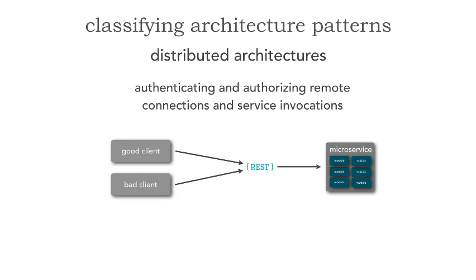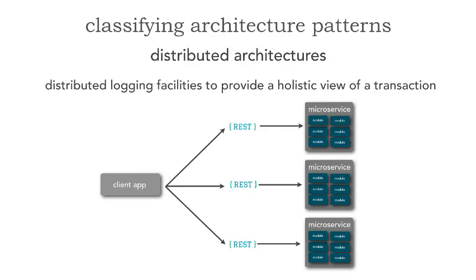The third thing we have to deal with in the distributed world — that we don't have to in monoliths — is the whole idea of security. Since everything is remote, I have no idea who's calling me, and I want to prevent bad clients from accessing me. I need to secure and authorize all of these calls between each remote point. That becomes quite a challenge — something we don't necessarily have to think about in monolithic applications.